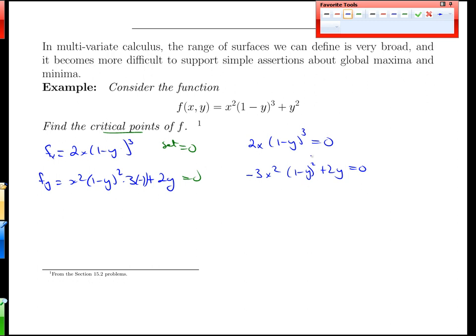So here there's no easy cancellations, but what we can say right off the bat is either x equals 0 or y equals 1. That's the only way to get a 0 derivative in the x direction. x has to be 0, then the whole thing is 0, or y equals 1, so that's 0. There's no other options.